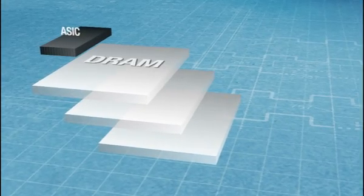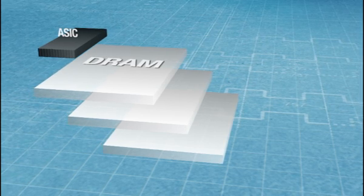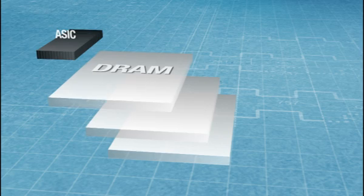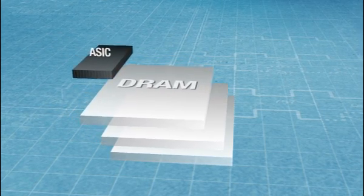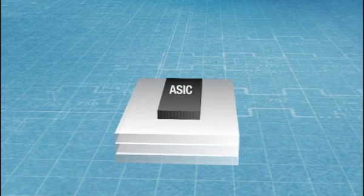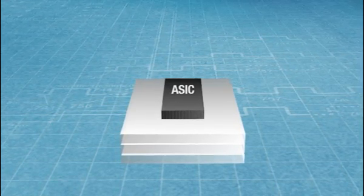So disaggregation is the concept of removing the high-performance interface off of the DRAM and actually building that high-performance interface into a different piece of silicon. So keep the DRAM at what it's good at, which is storing data, and build another chip that's really good at transmitting data at really good power efficiency. And now through advanced 3D packaging, I can actually recombine those two pieces of silicon together to form a single device again, essentially giving me the best of both worlds.